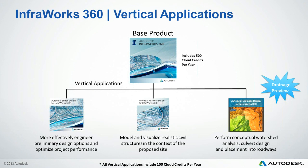InfoWorks 360 is the only version of InfoWorks that can have vertical applications added on top of it. There are currently two vertical applications that can be purchased: Bridge Design for InfoWorks 360 and Autodesk Roadway Design for InfoWorks 360. There is also a third add-on — Drainage Design for InfoWorks 360 — which is currently free. These three only install themselves on InfoWorks 360, and that truly differentiates the product.